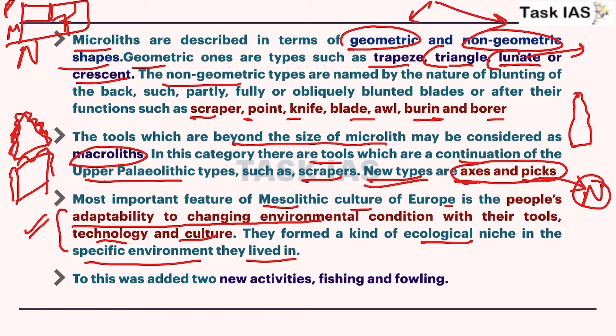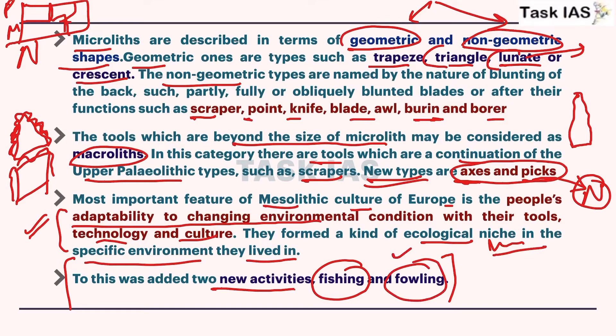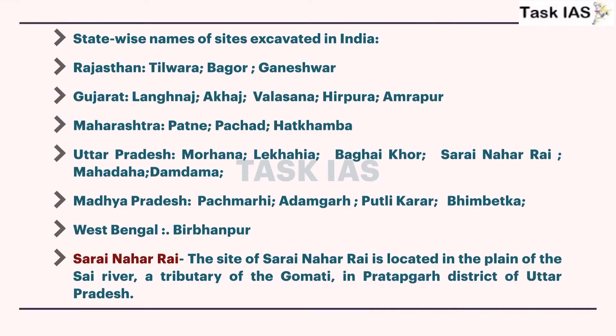In every environment there are specific challenges, specific conditions, and some extra benefits, and according to environment, humans tried to adapt. Earlier hunting and gathering was continuing, and now two new economic activities - fishing and fowling - were also added, because climate had changed, bringing smaller animals and birds. That's why fowling and fishing were new activities that became a must.